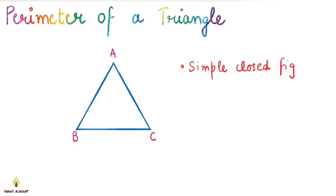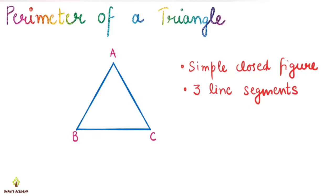And how many lines are made? AB is one line segment, BC is one line segment, CA is one line segment. So this is three line segments. This is a simple closed figure made by line segments. What is it? A polygon. So triangle is a polygon. Triangle is a simple closed figure formed by three line segments.